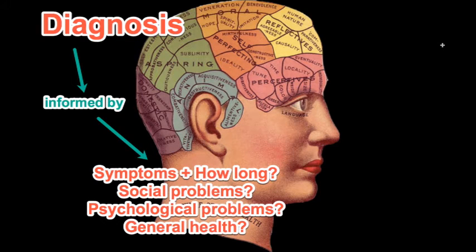In order to treat people who exhibit abnormal behaviors, a diagnosis must first be made after a study of the patient's symptoms. When looking at symptoms, clinicians focus on things like their severity, how long the patient has had the symptoms, plus information about their health and any social or psychological problems that they may have.